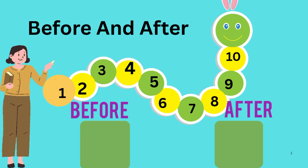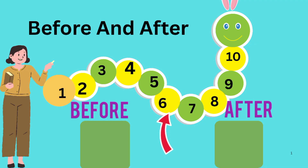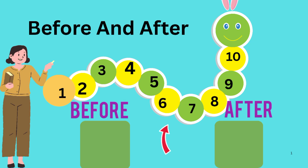Let's do before and after numbers. Look at the caterpillar with numbers 1 to 10. 1, 2, 3, 4, 5, 6, 7, 8, 9, 10.